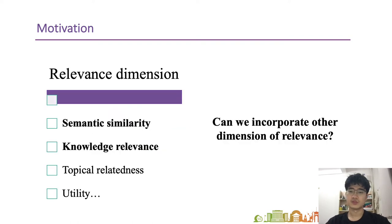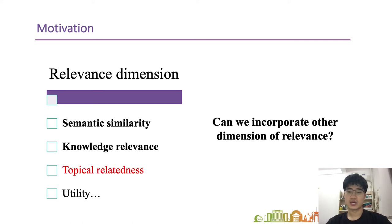Given different dimensions of relevance, we find that most existing neural retrieval models only consider semantic similarity. Some knowledge-based retrieval models also consider knowledge relevance by using an external knowledge graph. So in our work, we attempt to incorporate topical relatedness and try to combine it with semantic similarity and knowledge relevance to better estimate relevance.